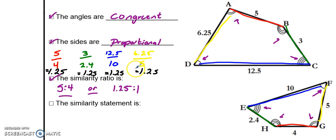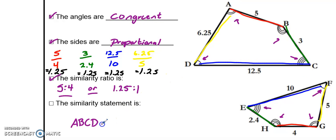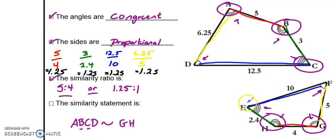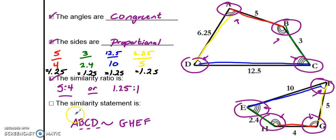Next, let's talk about the similarity statement — a series of letters that names both polygons and shows that they are similar. Let's write the vertices of the larger polygon first: A, B, C, D, the vertices and corners in order. Then I'll write the similarity symbol — just one squiggle. Then I'll write the letters of the other polygon in an order that corresponds with the first. A corresponded with G, so this will start with G. B corresponded with H, so G, H. C corresponded with E — both have three marks — so E. And D corresponded with F — they both have that one mark. So the similarity statement is: ABCD is similar to GHEF.